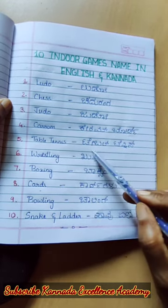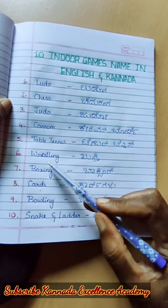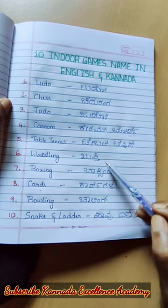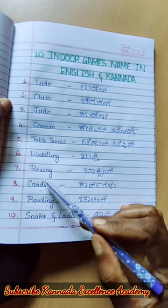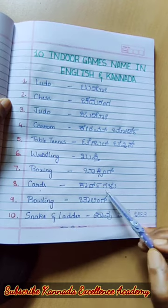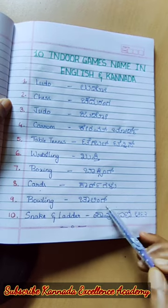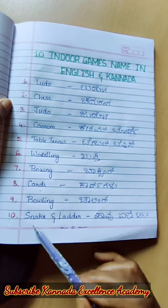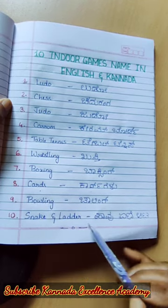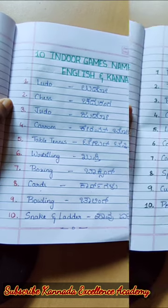Table Tennis. Wrestling — Kusty. Boxing. Cards — Kardugaloo. Bowling. Snake and Ladder — Avu Hany Hata.